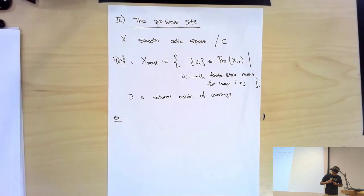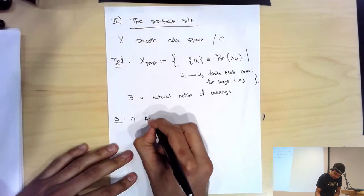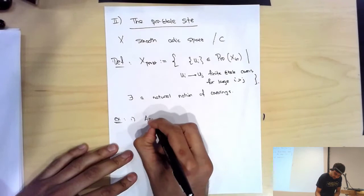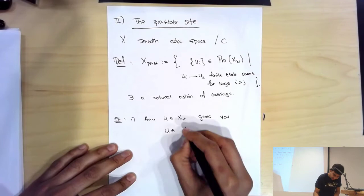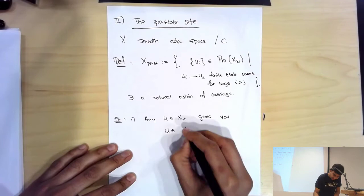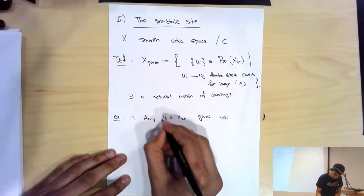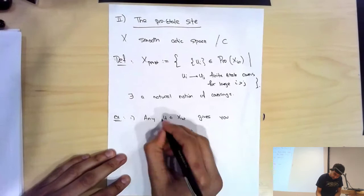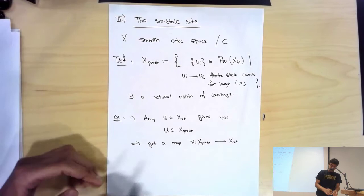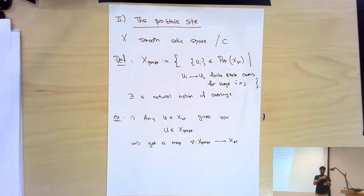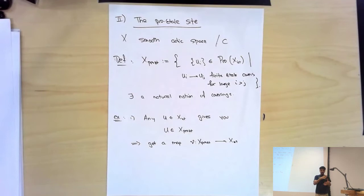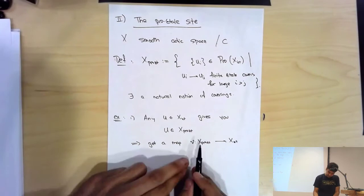Let me give some examples. First, any étale morphism is a pro-object in the pro-étale site: any U over X in the étale site gives a U — just the constant diagram — inside X_{pro-ét}. This construction gives a functor, which is a map of sites: ν: X_{pro-ét} → X_{ét}. This is a morphism of sites, meaning the map on categories of open sets goes in the other direction, saying that an étale morphism is pro-étale.